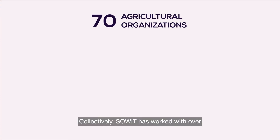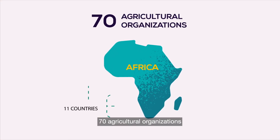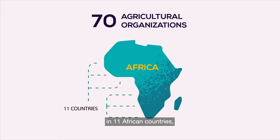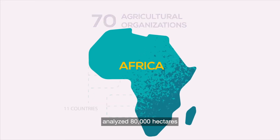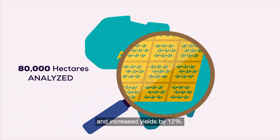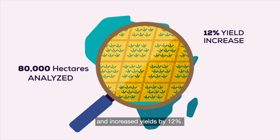Collectively, SOWID has worked with over 70 agricultural organizations in 11 African countries, analyzed 80,000 hectares, and increased yields by 12%.